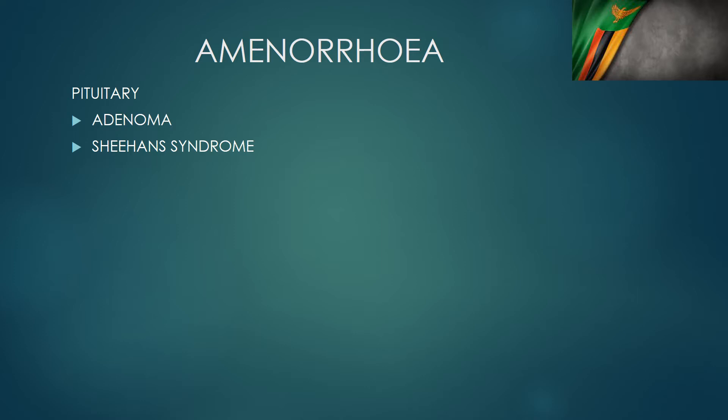Then there's a condition called Sheehan syndrome. Sheehan syndrome is a condition where there is pituitary necrosis. Pituitary necrosis arises because a woman has had postpartum hemorrhage — she's bled, there's reduced perfusion of blood to the pituitary gland, and the pituitary gland dies. Because of that, she presents with amenorrhea and also with difficulty breastfeeding, because prolactin is also not being produced, as it is produced in the pituitary gland as well.